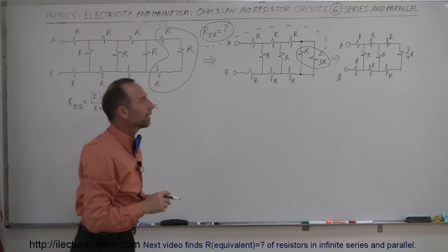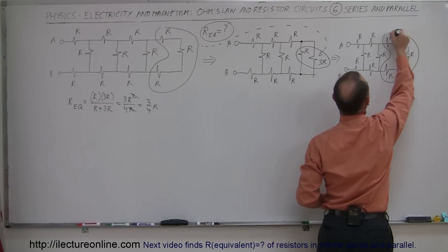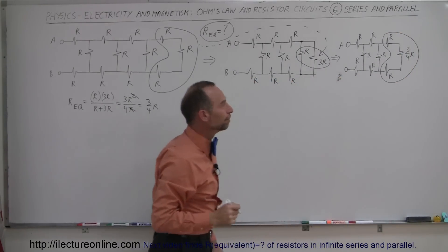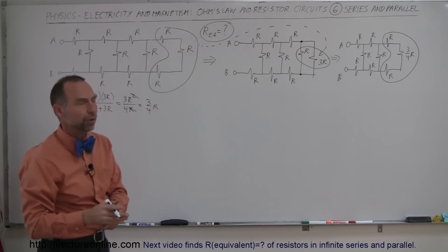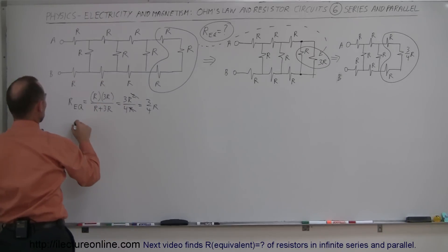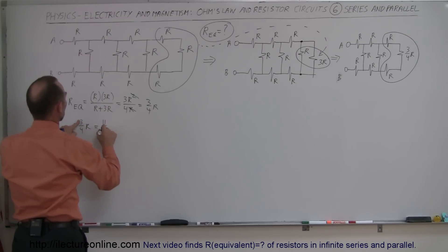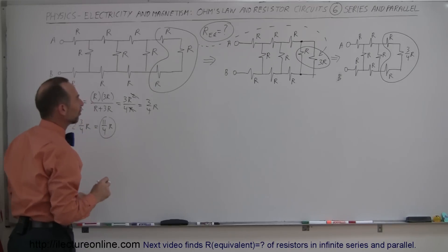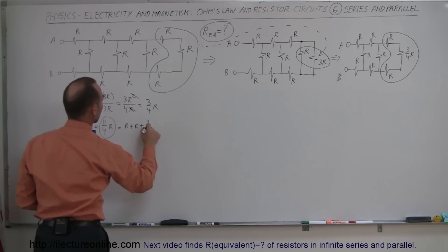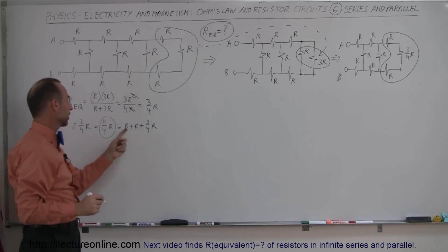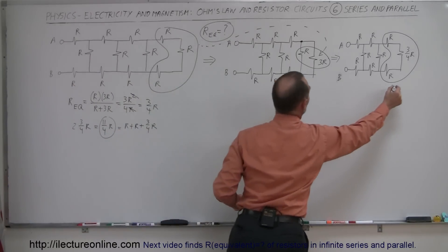Now we're going to simplify even more by taking these three resistors in series and combining them. R plus R plus three-quarters R equals two and three-quarters R. Converting to fractions: 2 times 4 is 8, plus 3 is 11, so that's eleven-fourths R. The sum of R plus R plus three-quarters R: if there were 3 full R's we'd have twelve-fourths, but minus one-quarter gives eleven-fourths R.